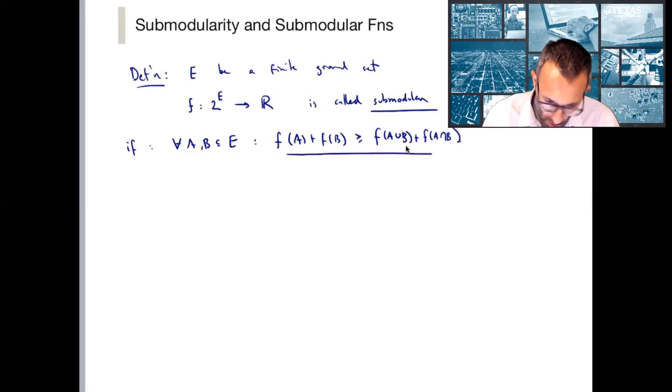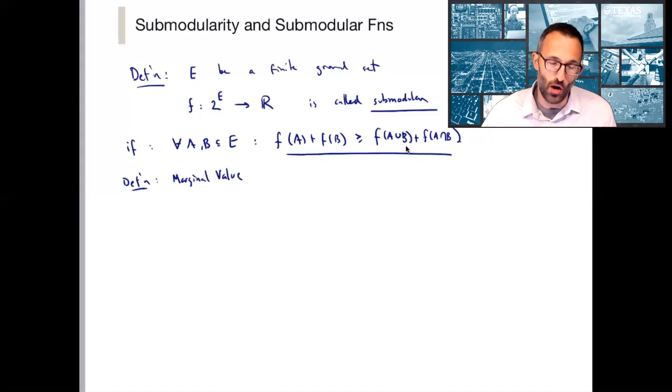This is the key property that we're going to be working with. Something that's very useful to define is called the marginal value with respect to a particular set. It will be clear from the definition that this depends on the particular subset that we choose.